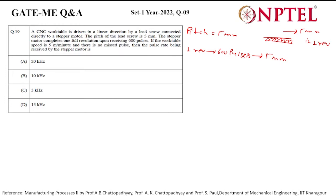The work table speed is 5 meter per minute. Table speed is 5 meter per minute. Then we have to find in hertz, so we have to find in one second how many pulses we require.